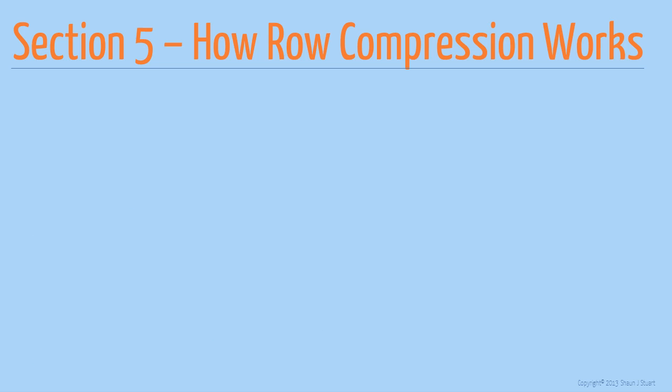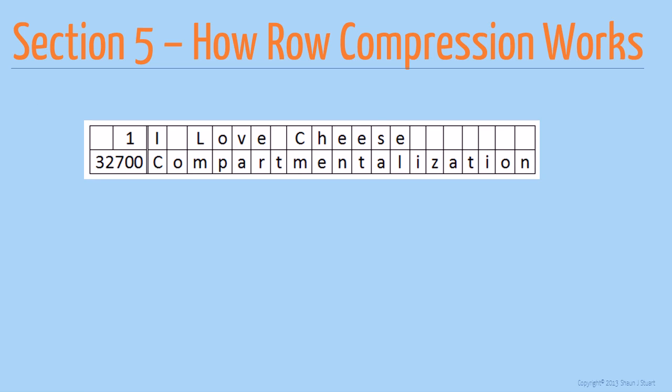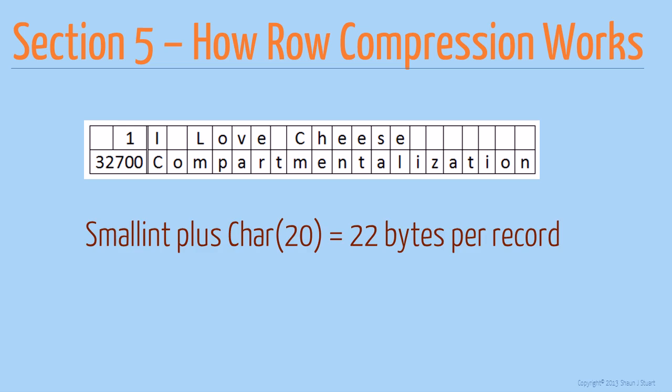By definition, row compression only operates on a single row at a time. So let's look at an example. Here we have two rows. Each row consists of two columns — the first is a small integer field, and the second is a fixed length 20 character field. A small integer field requires 2 bytes for storage, and the char20 field requires 20 bytes, for a total row size of 22 bytes per record. And here we're ignoring the 2 byte slot array entry for the rows.